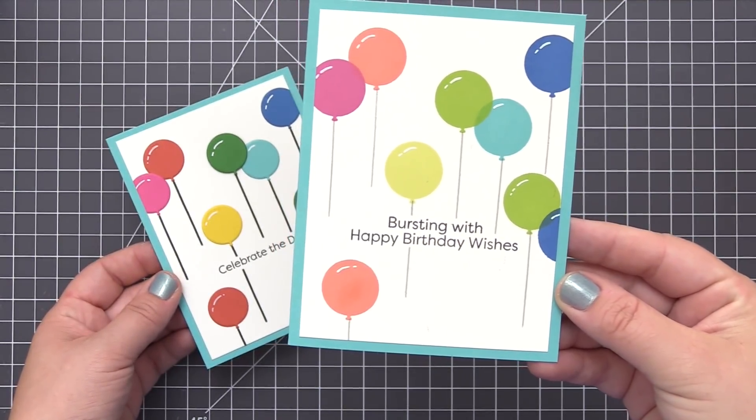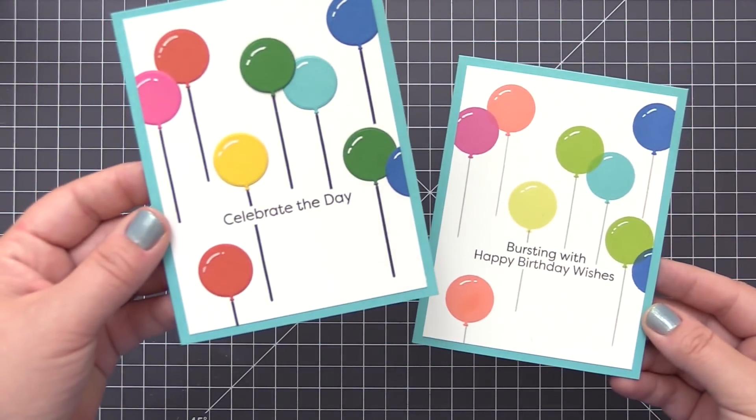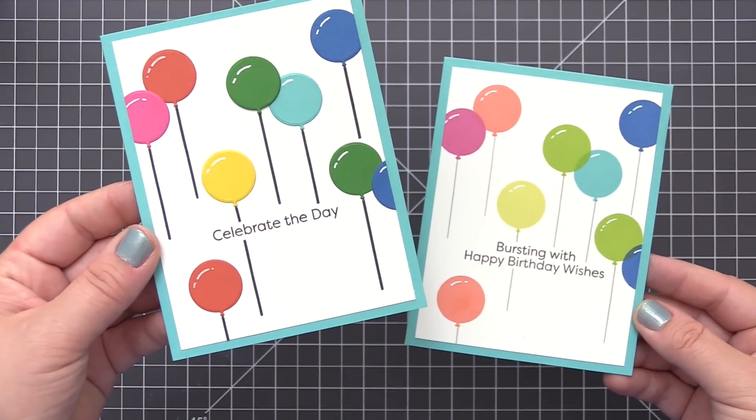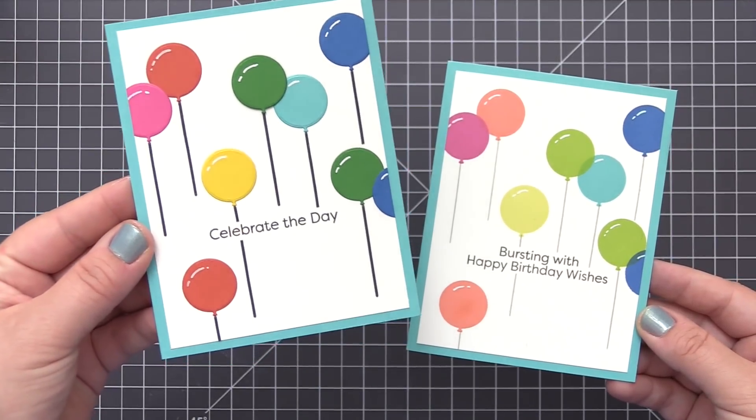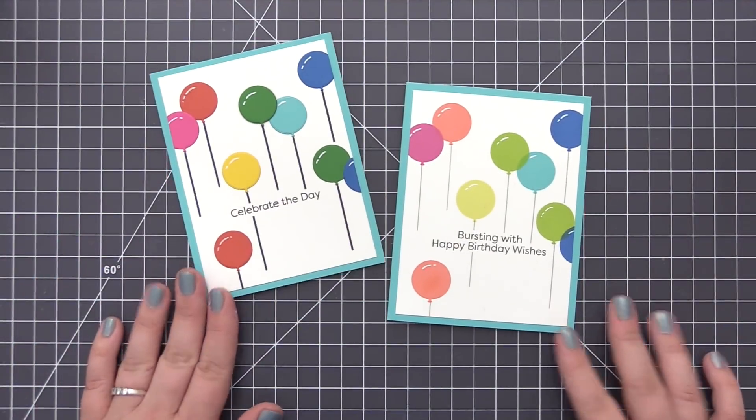I also created a second card, and for that one I used all of the cardstocks from the kit with the same balloons but the dies this time. So they're the same shape, but I used the dies and the cardstock for the second card, and for the first one we used the stamps with some stamping inks.